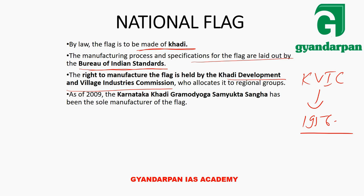The right to manufacture the flag is held by the Khadi Development and Village Industries Commission (KVIC), which was established in 1956 during the Second Five Year Plan. As of 2009, Karnataka Khadi Gramodyog Samyukta Sangh has been the sole manufacturer of the flag.